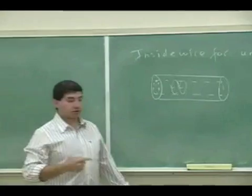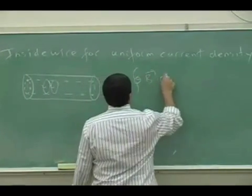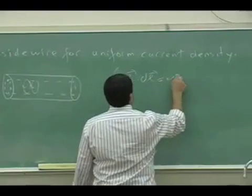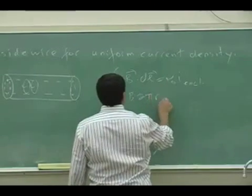So I'm going to do integral of B dotted into DL is mu zero I enclosed, so it's going to be B times two pi r again.